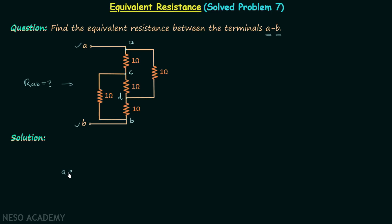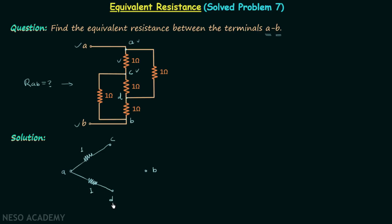Now we will reconstruct our network with node A, node B, node C, and node D. In the original network, between A and C we have a 1 ohm resistor, so let's connect 1 ohm between A and C. Between A and D we have another 1 ohm resistor. Then between C and B we have a 1 ohm resistor.